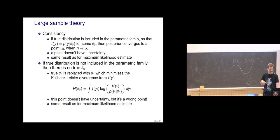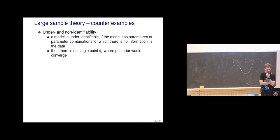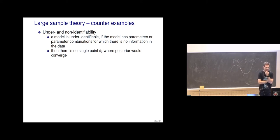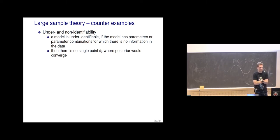Posterior predictive checking is of course easy if we have infinite data. Then it's the same result as for maximum likelihood. It's also possible that we have models where the model is under-identifiable — there are parameters or parameter combinations for which there is no information in the data, and there's no single point where the posterior would converge.